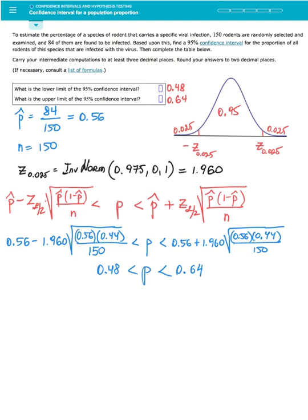Let's enter the information we have into this formula. Point estimate p-hat is 0.56. Subtract Z score 1.960 times square root of point estimate 0.56 times its complement of 0.44 divided by sample size of 150.